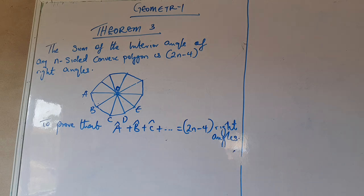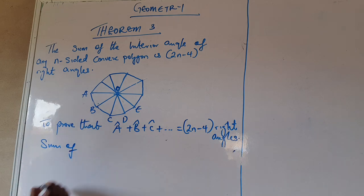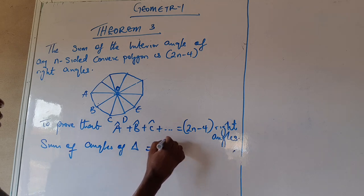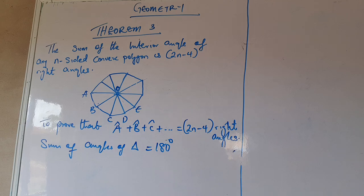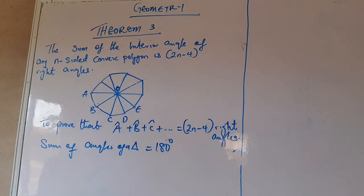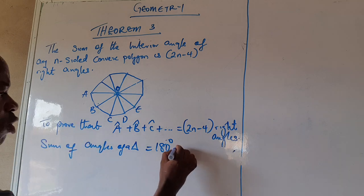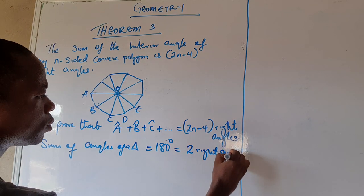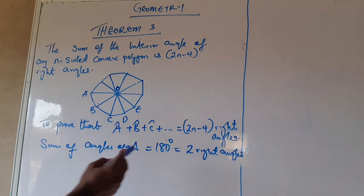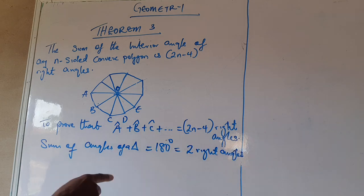To start with, we begin from the fact that the sum of angles of a triangle is equal to 180 degrees. We know that. And you will agree with me that a right angle is equal to 90 degrees. So 180 degrees is also equal to 2 right angles, because 2 times 90 gives us 180.